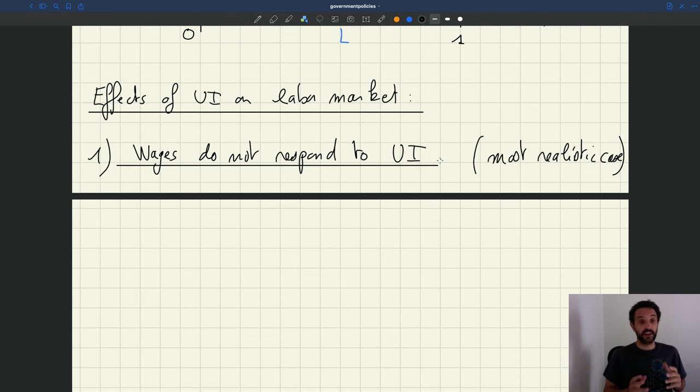Okay, so that's the first thing. And second, we have to assume a shape of labor demand. Do we want it downward sloping? Do we want it horizontal?